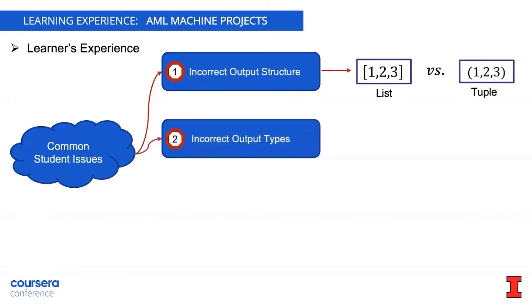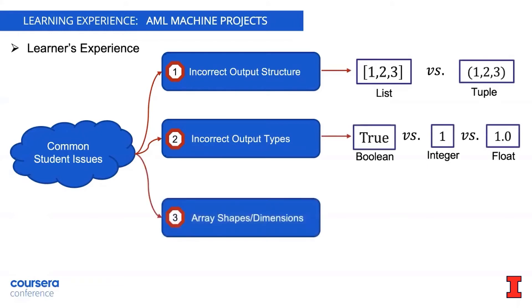The second kind of common mistake is to produce the incorrect output data type or the incorrect casting. For example, you could produce a boolean instead of an integer or instead of a floating point number.